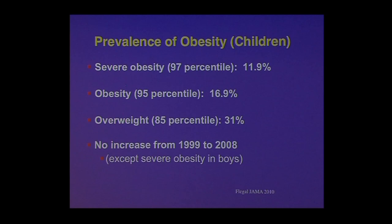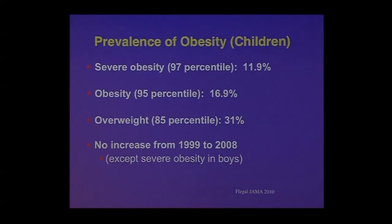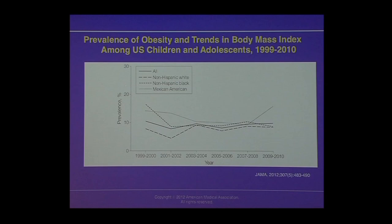On average it appears to be stabilizing, although there are pockets where it's still increasing. Here's a trick question: if severe obesity is defined as being above the 97th percentile in weight, how can the incidence be anything other than 3%? The answer is because this is the 97th percentile of the standards from the 1960s and 70s. The CDC prevalence data in children shows it's generally flat, but with some pockets of increase in Latino children and African-American children.